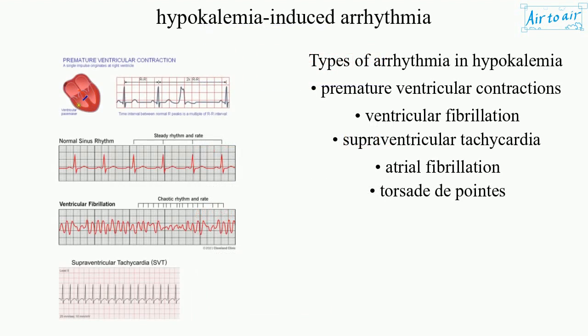Types of arrhythmia in hypokalemia: premature ventricular contractions, ventricular fibrillation, supraventricular tachycardia, atrial fibrillation, and torsade de pointes.